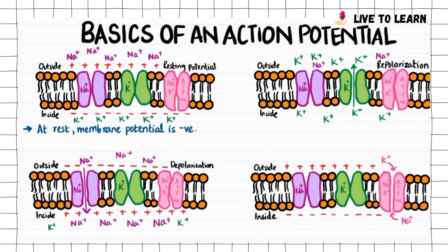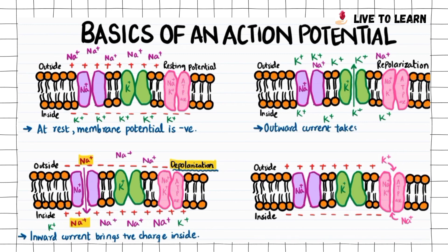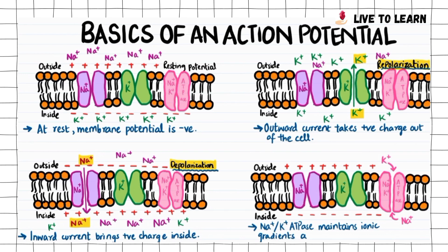When stimulated, the channels open and ions move along their electrochemical gradient and change the membrane potential. Inward current brings positive charge, usually sodium ions, into the cell and depolarizes the membrane. Outward current takes positive charge, usually potassium, out of the cell and repolarizes the membrane. The role of sodium-potassium ATPase is to maintain ionic gradients across the cell membranes.